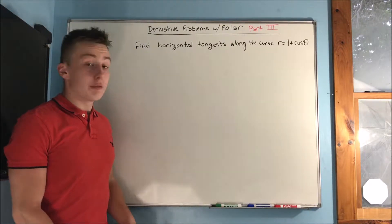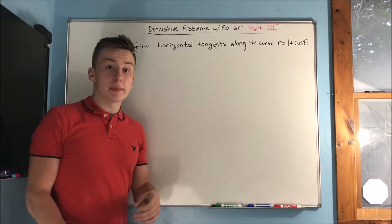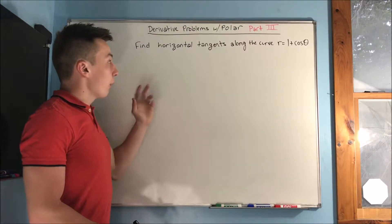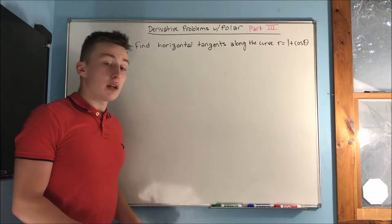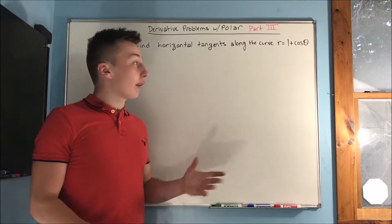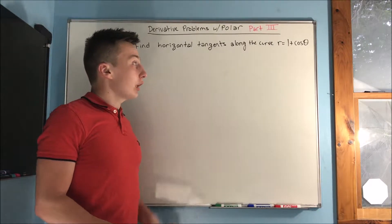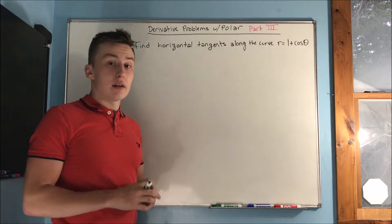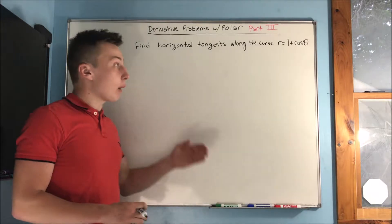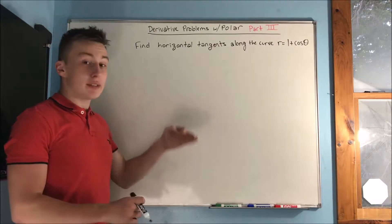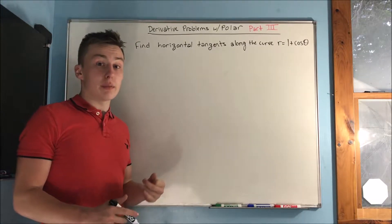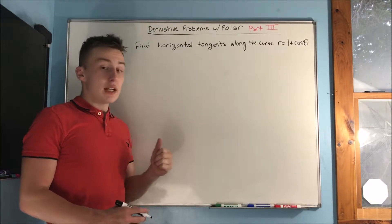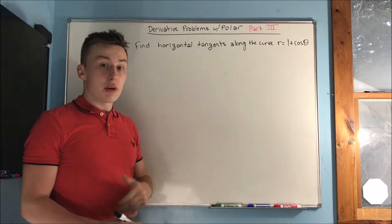This is part three of derivative problems with polar. We want to find the horizontal tangents along the curve r equals 1 plus cosine theta. So we want to find where the derivative is going to be zero. We need to actually find the derivative.